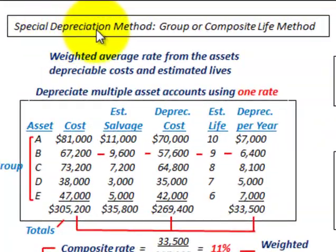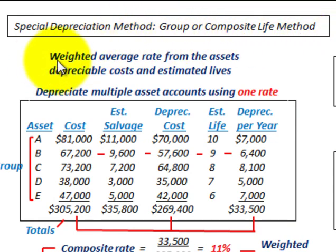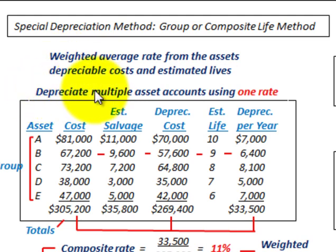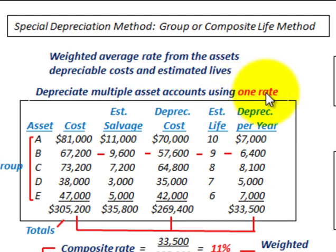We're going to be looking at a special depreciation method called the group or composite life method. This is where we use a weighted average rate of the assets, their depreciable cost, and their estimated lives. We depreciate multiple asset accounts using one depreciation rate — only one depreciation rate.